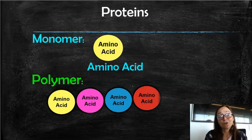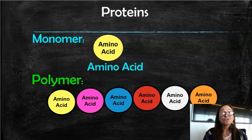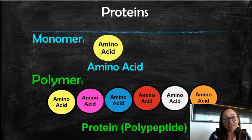So when we look at the monomer of proteins and the polymer, the monomer of a protein is an amino acid. And then the polymer of proteins is called a polypeptide.